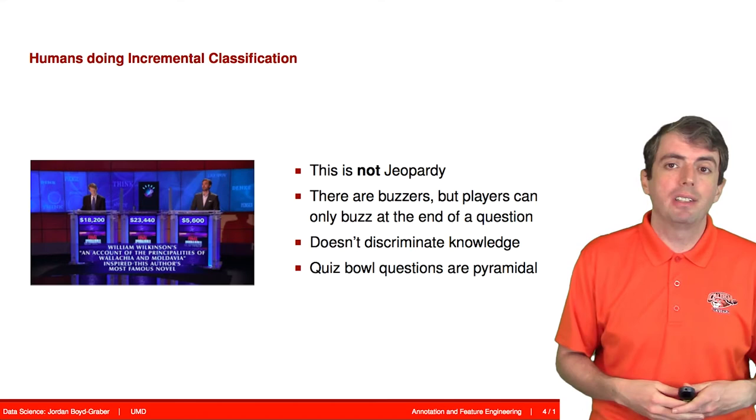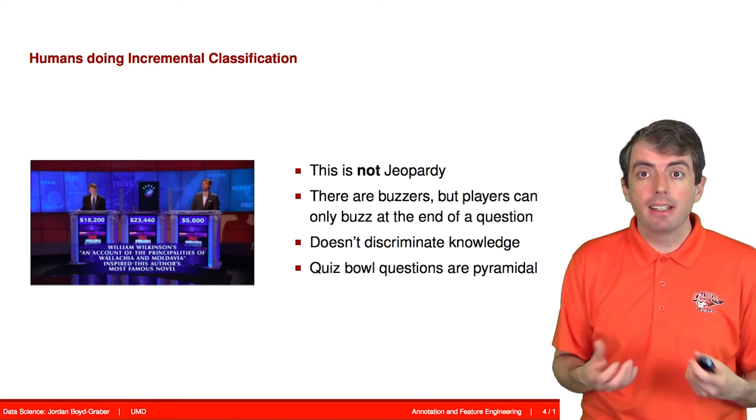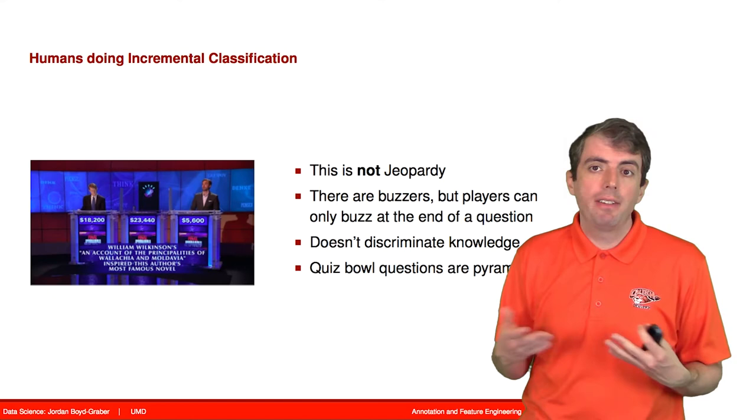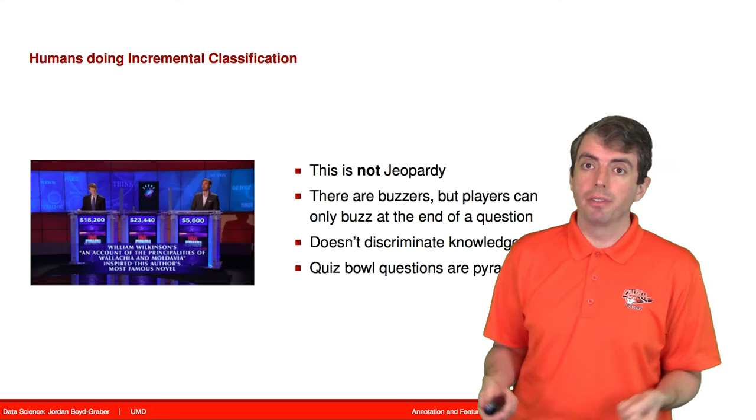So one thing that I do in my research program is I work with these data and I try to build systems that can answer these questions. And one way of dividing up the task is you have a system that generates a bunch of guesses. We call this the guesser. And then you have a system that tries to determine whether the guesser got it right or not. And you can treat that as a classification problem. And because it's a classification problem, we can build features for it. And so let me talk a little bit about how you might do feature engineering for this problem.